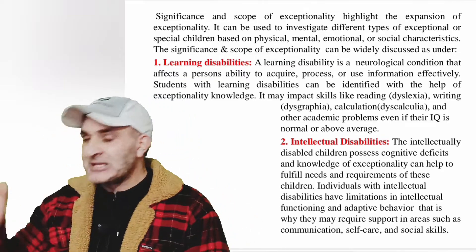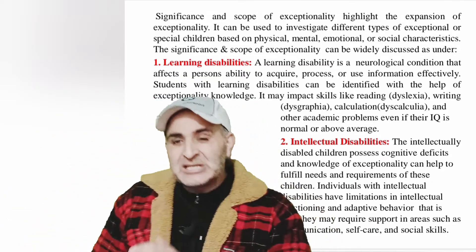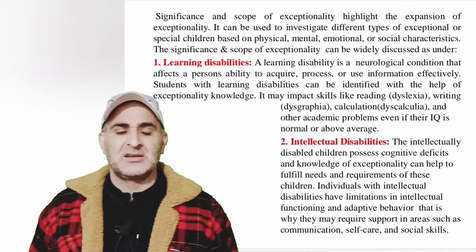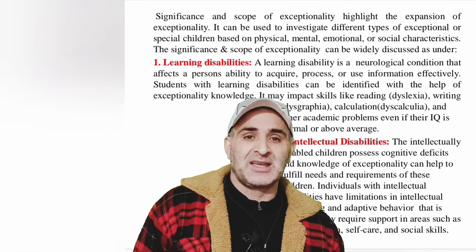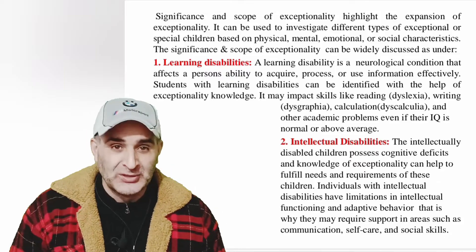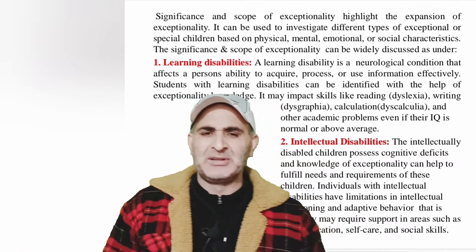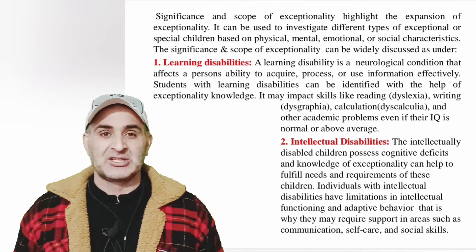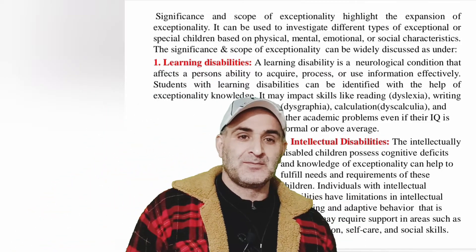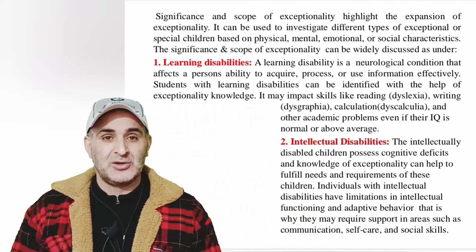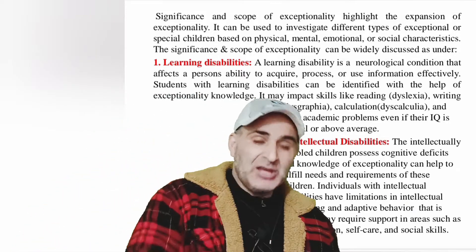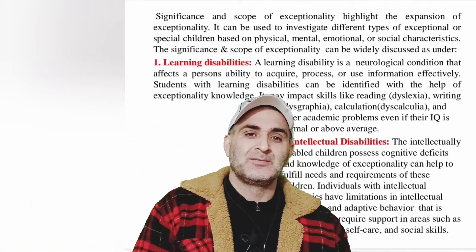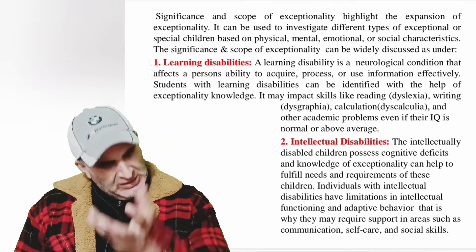Number two: Intellectual Disabilities. Intellectually disabled children possess cognitive deficits. These children are also known as mentally retarded. Mentally retarded or intellectually disabled children are children whose IQ is less than 70, and due to this low IQ, they are facing problems in every walk of life.